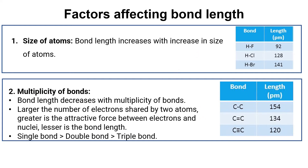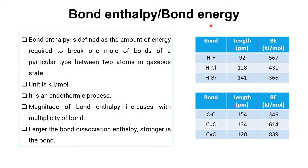Now let's look at bond enthalpy, or bond energy. As shown on the graph, the minimum of the potential energy indicates the bond energy. Bond energy is the amount of energy required to break one mole of bonds between two atoms. This is measured in kilojoules per mole and is an endothermic process, since energy must be supplied to break a bond.